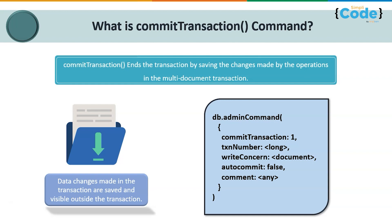The write concern tells you that when committing a transaction, the session uses the write concern specified at the transaction start. When a transaction commits, all data changes made in the transaction are saved and visible outside the transaction. A transaction will not commit some changes while rolling back others — until a transaction commits, the data changes made within it are not visible to any user outside of the transaction.